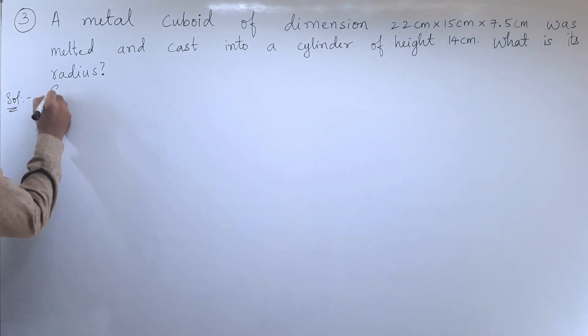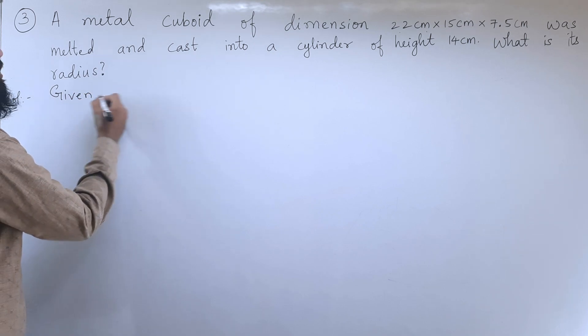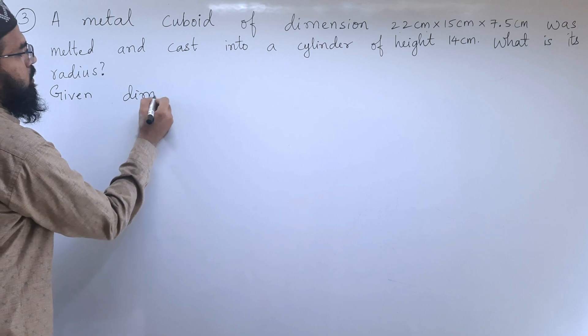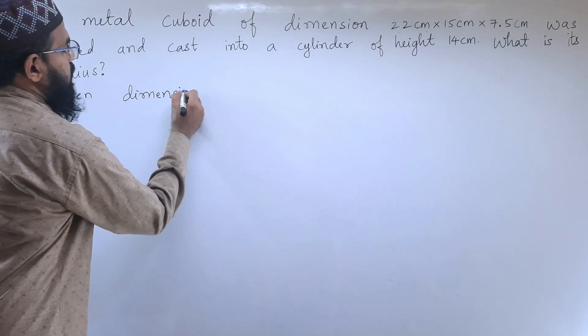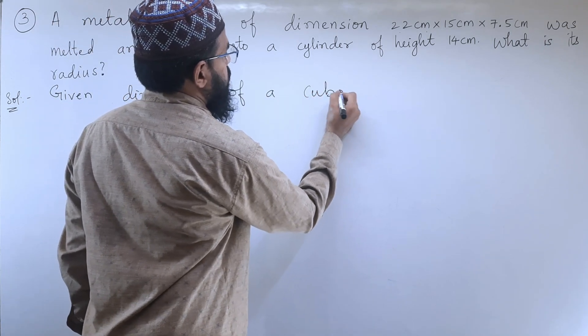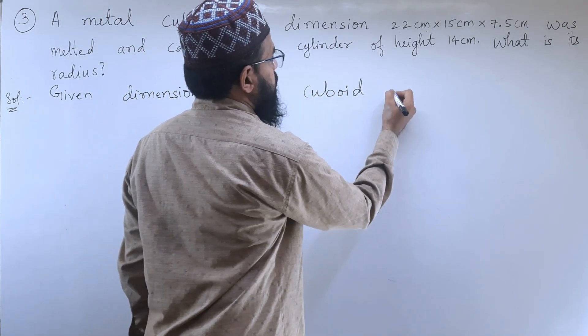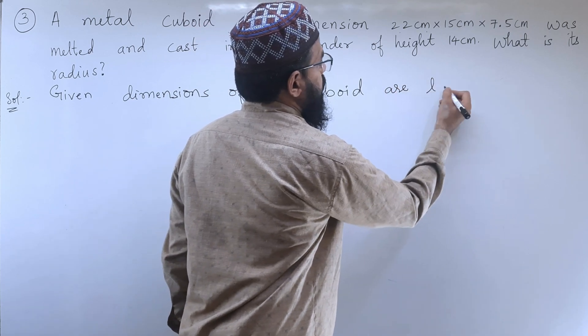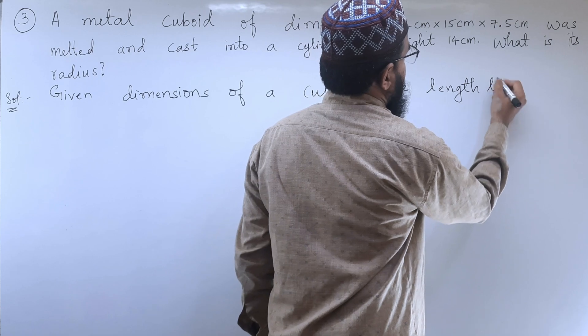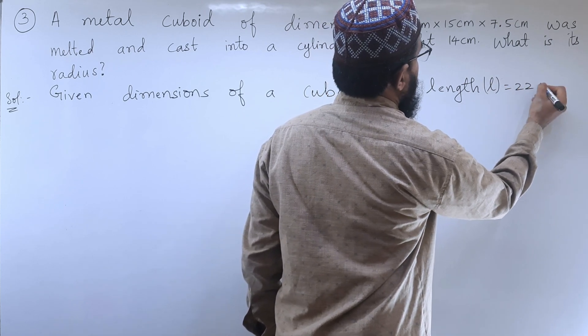Let us start. We will start the solution with the given information. Given dimensions of a cuboid are length is equal to 22 centimeter.